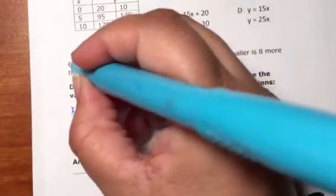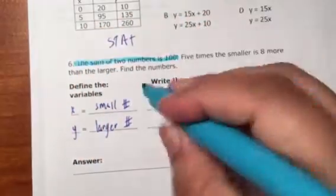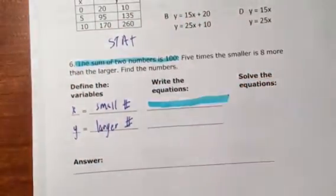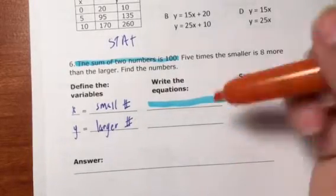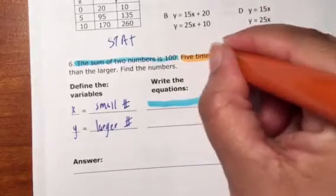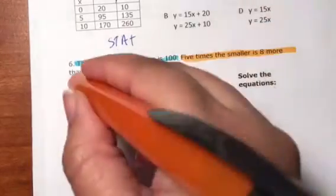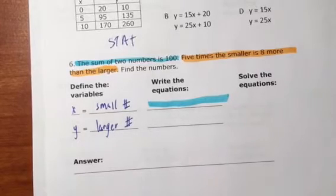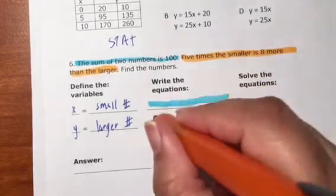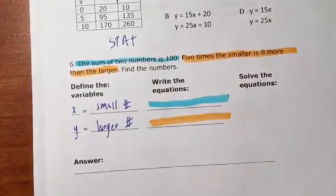Let me highlight. This comes from one equation, and then five times the smaller number is eight more than the large number. That one's worded really funny, but it won't be hard, I promise.